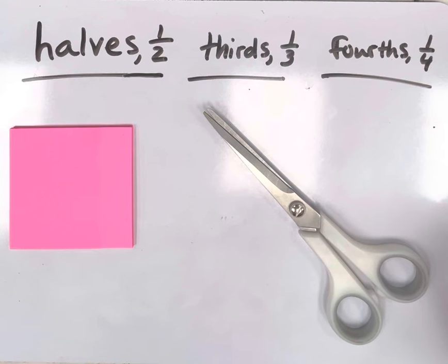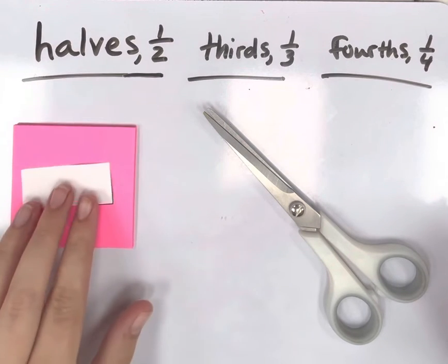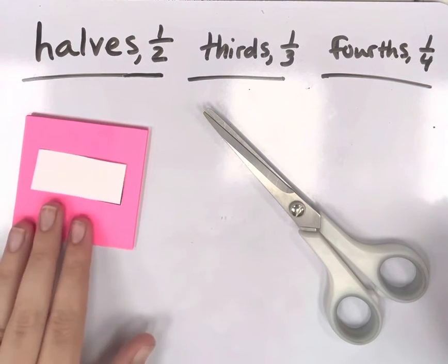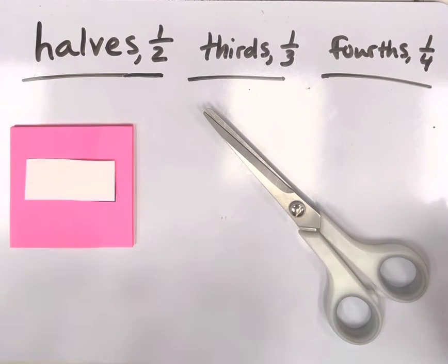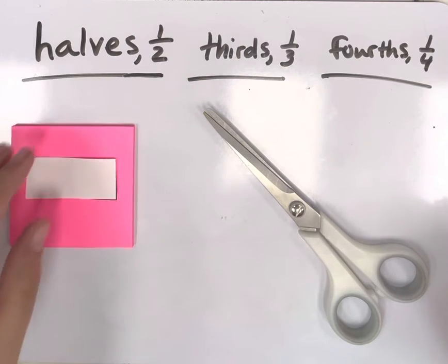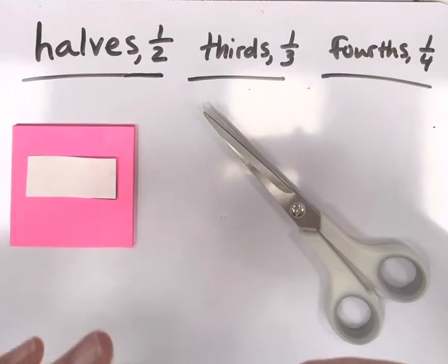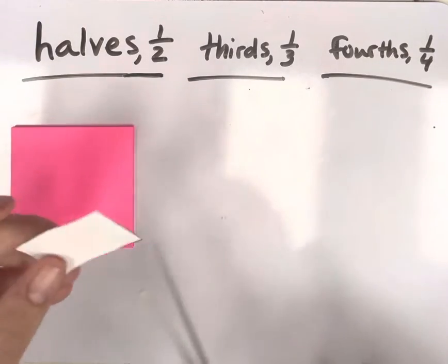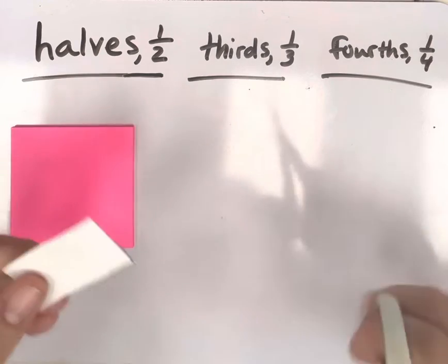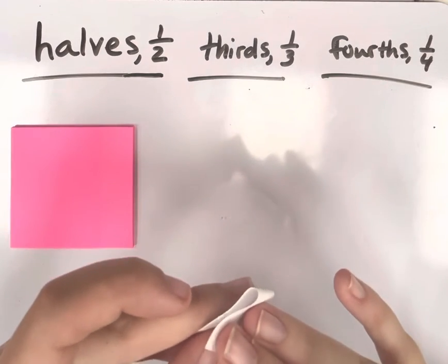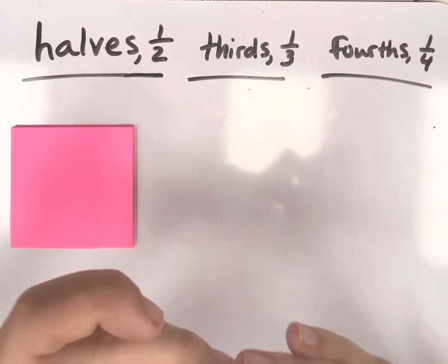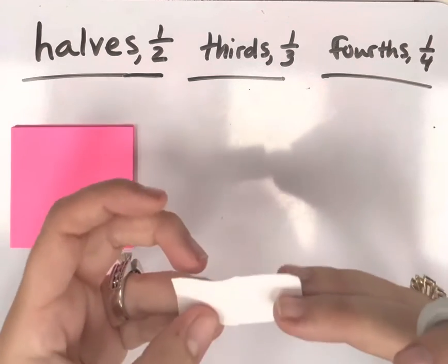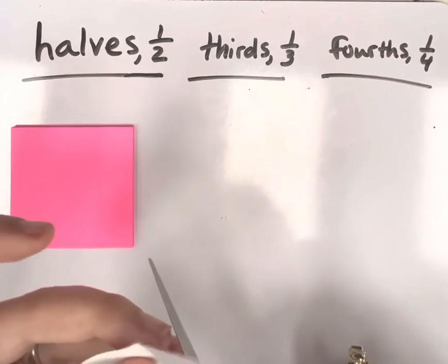So first we have this shape. I'm going to lay it down on this pink background so we can see it better. This is a rectangle. And I'm going to see if I can cut this rectangle into halves. So that's two equal parts. You're pretending maybe this is a candy bar and you're sharing it with a friend. You could even fold it first because we know we're going to need two equal parts. If you fold it once, it creates a line down the center.